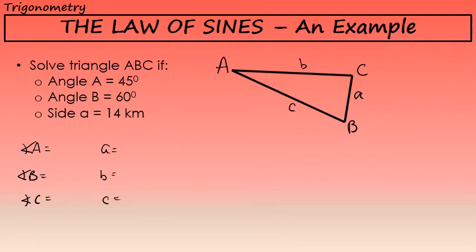In this problem, the given information is that angle A is 45 degrees, angle B is 60 degrees, and side a is 14 kilometers. I'm left to find the measure of angle C and the lengths of sides b and c.